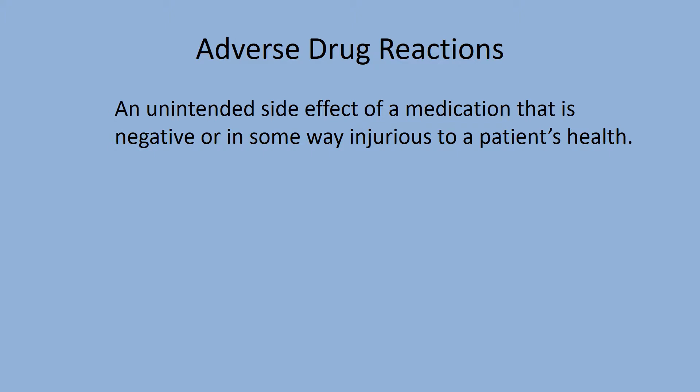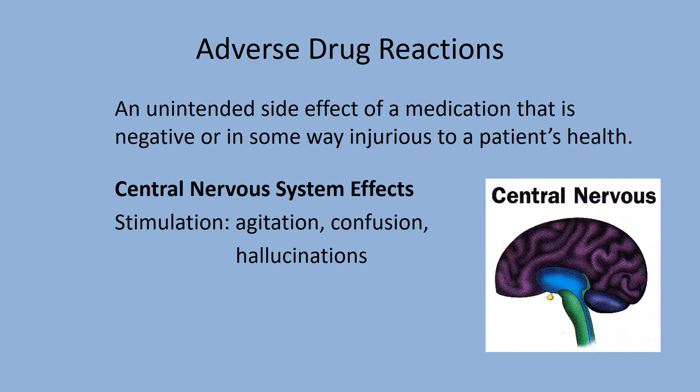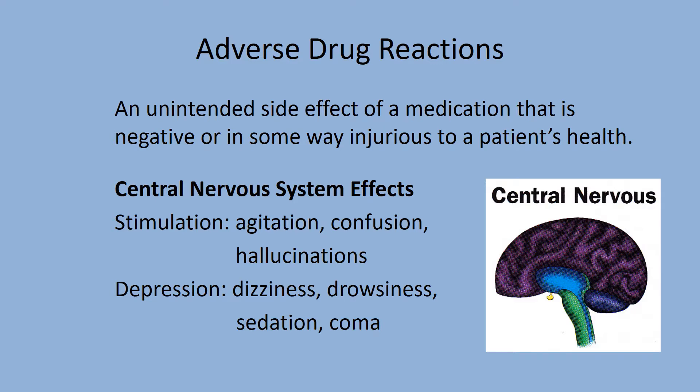Central nervous system effects involve drugs either stimulating or suppressing the brain and brain stem. For stimulation effects, you'll have agitation, confusion, and hallucination. For depressive effects, those are easier to recall because when you're dizzy, drowsy, sedated, or in a coma, you are slowing down or out altogether. Anything that's not depressive is most likely going to be a stimulant.